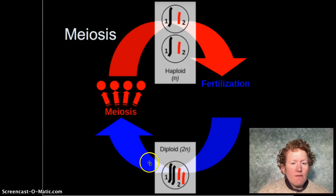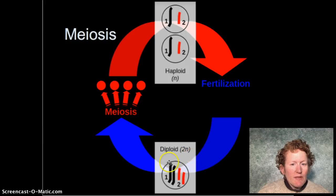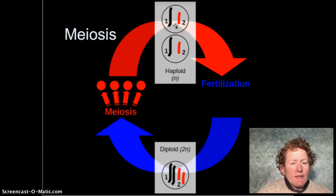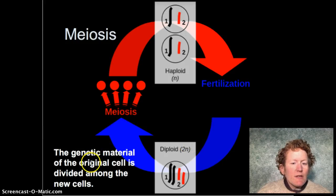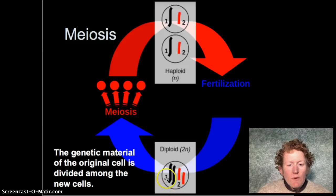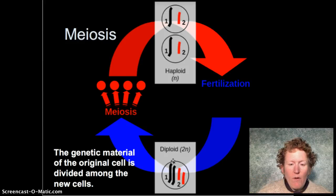The diploid cells divide, they make eggs and sperm, the eggs and sperm get together in fertilization. It's not really a cycle because it stops at fertilization. You're a diploid cell, you undergo meiosis, you become a haploid cell — eggs and sperm — and when those eggs and sperm get together, you have a diploid cell again. The genetic material of the original diploid cells is divided among the new cells, and this will make more sense when we go over meiosis further.